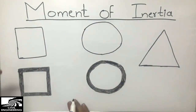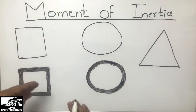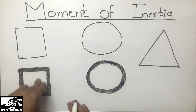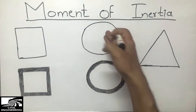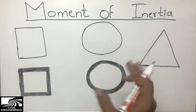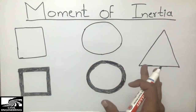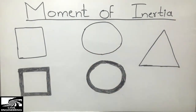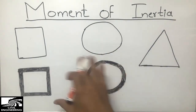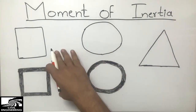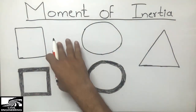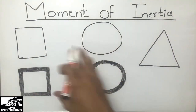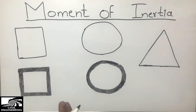Specifically, we are going to find and compare the moment of inertia of solid objects versus hollow objects. I will explain the moment of inertia of these objects by proving it as I draw them on the board.